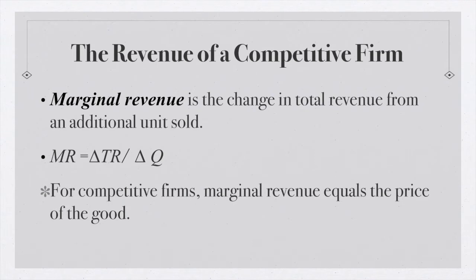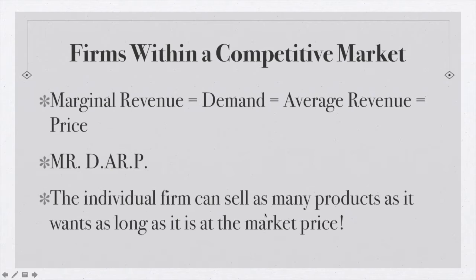Marginal revenue tells us how much revenue we get from selling one more additional unit of the good. The formula is the change in total revenue over the change in quantity. For the competitive firm, marginal revenue is actually equal to the price of the good, because we have to take the market price as given. For example, in the market for number two lead pencils selling for $1 a dozen, each additional dozen brings in $1. The marginal revenue is always equal to the price. So for competitive firms: marginal revenue equals demand, equals average revenue, equals price.